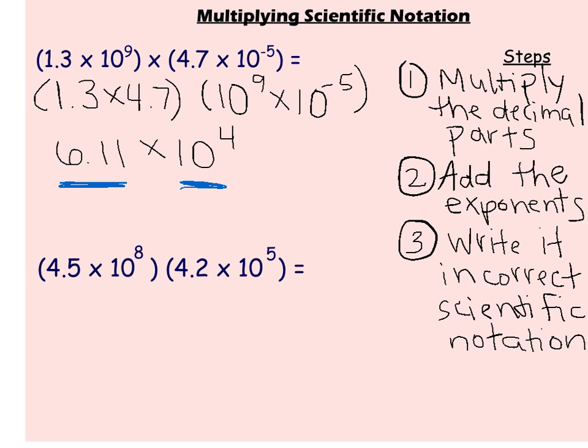If we go on to the second one, I'm going to do the same steps. First, I'm going to take my first two numbers: 4 and 5 tenths and 4 and 2 tenths, and multiply those together. When I multiply those together, I end up with 18 and 9 tenths.